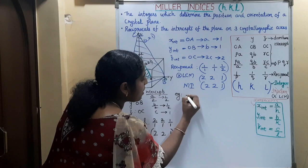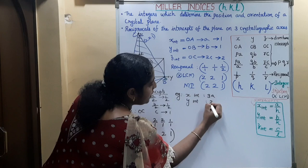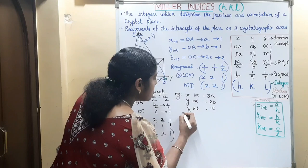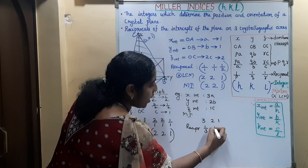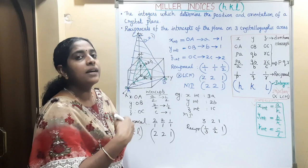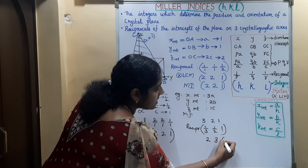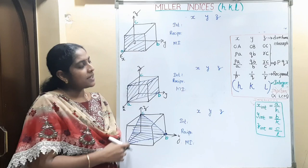Example: A crystal plane has x-intercept 3A, y-intercept 2B, and z-intercept 1C. Find the Miller indices. The intercept coefficients are 3, 2, 1. Taking the reciprocal gives 1/3, 1/2, 1. These are fractions, so multiply by the LCM which is 6: 6/3 = 2, 6/2 = 3, 6×1 = 6. So the Miller indices are (2, 3, 6).